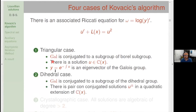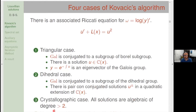There is another case in which the Galois group is conjugated to a subgroup of the infinite dihedral group — the Zariski closure of the union of all dihedral groups. This dihedral group has two connected components, and the connected component of the identity is C*. In this case, we find a pair of conjugated solutions for the Riccati equation in a quadratic extension of the field of rational functions. The third case is the crystallographic case, in which all solutions are algebraic and of degree bigger than two. There is also the non-integrable generic case.